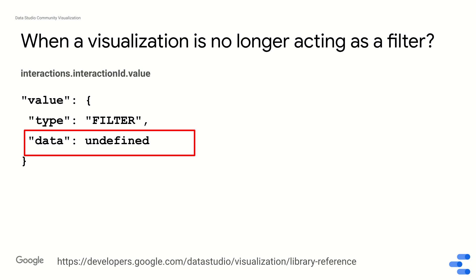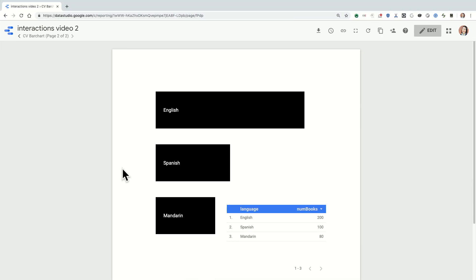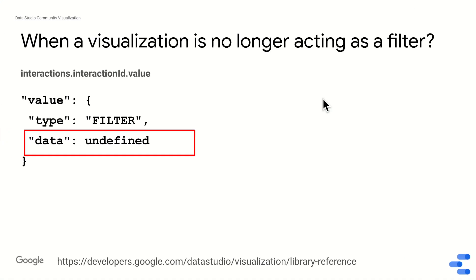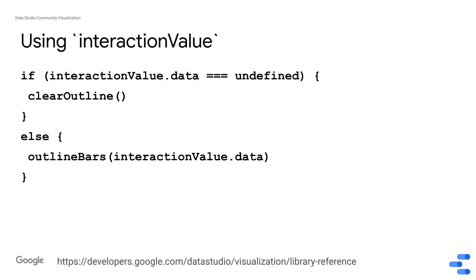How about when a visualization is no longer acting as a filter? For example, if I've acted as a filter and now I'm clicking on the reset action, how does my chart know when to take the red highlights off? The value it sends back will still have the type filter, but the data will be undefined. So you should be checking this interaction value object for the data and whether or not it's undefined. For example, I would have some code that writes: if interaction value dot data is undefined, I'm going to clear the outline because I know it's no longer acting as a filter of other things on my dashboard.